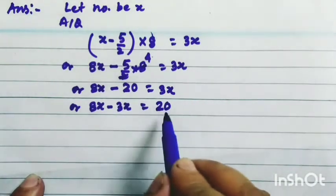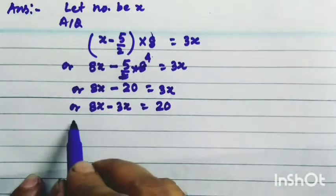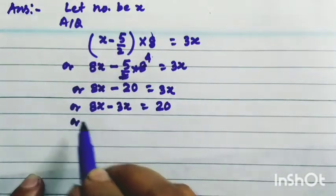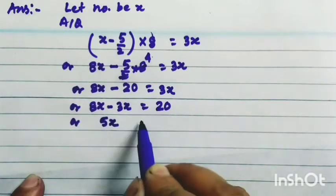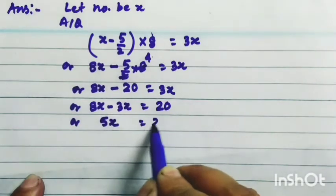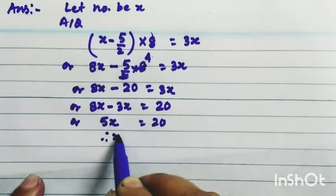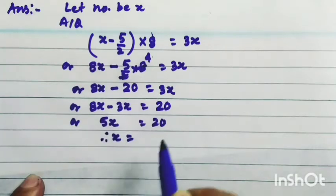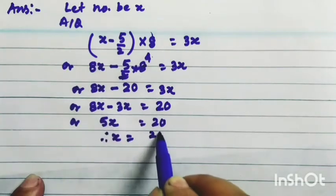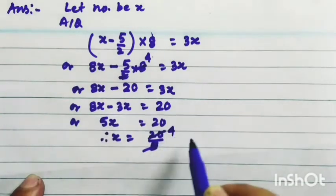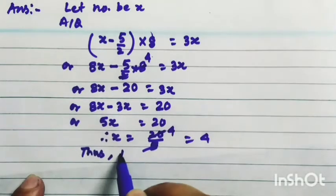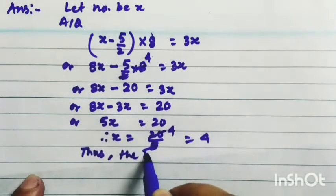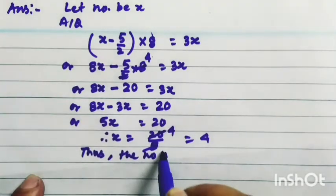Solving the equation: 8x minus 3x equals 5x, equal to 20. Therefore, x equals 20 by 5. 5 goes into 20 equals 4. Thus, the number is 4.